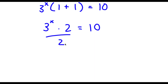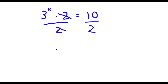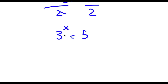So now I have 3 to the power of x times 2 is equal to 10. Dividing both sides by 2, these two cancel out and I'm left with 3 to the power of x is equal to 10 divided by 2, which is 5. So I now have a new equation: 3 to the power of x equals 5.